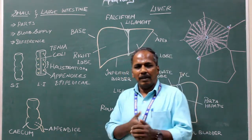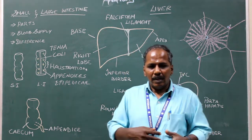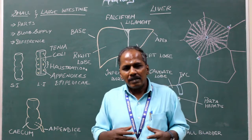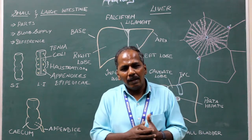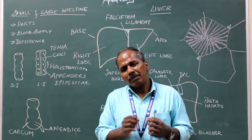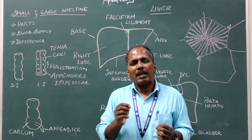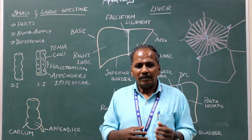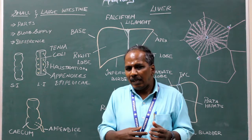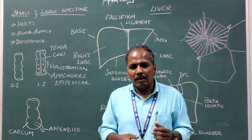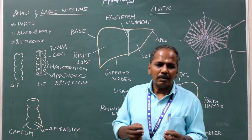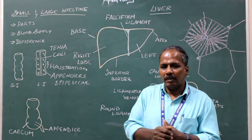Blood supply: the entire small intestine is supplied by the superior mesenteric artery. Venous drainage: it is drained by the superior mesenteric vein.